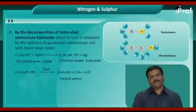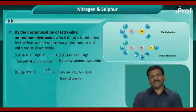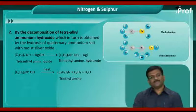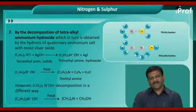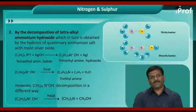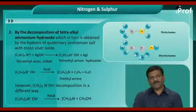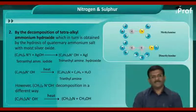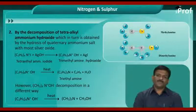Next method: by the decomposition of tetraalkyl ammonium hydroxide, which is obtained by the hydrolysis of quaternary ammonium salt with moist silver oxide. Tetraethyl ammonium iodide, when treated with silver hydroxide, gives tetraethyl ammonium hydroxide along with the liberation of silver iodide.